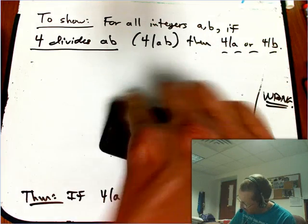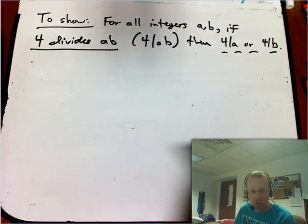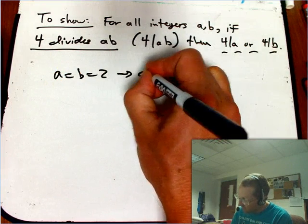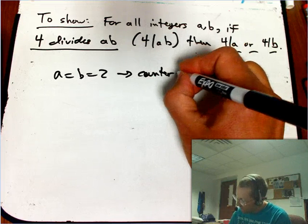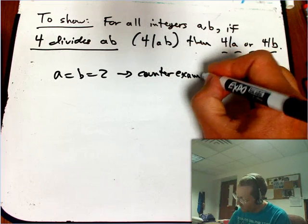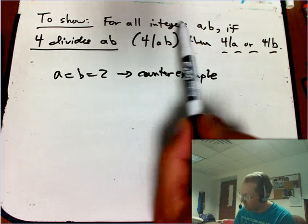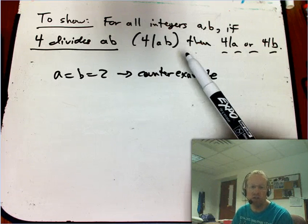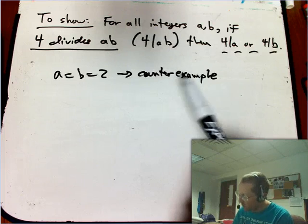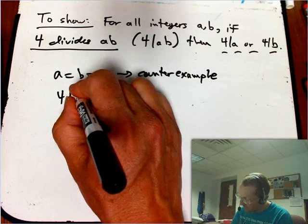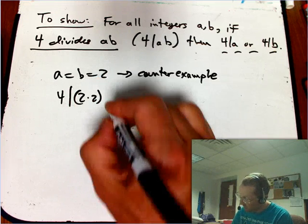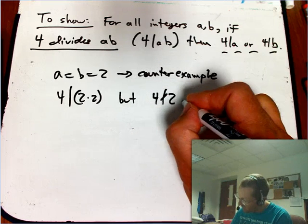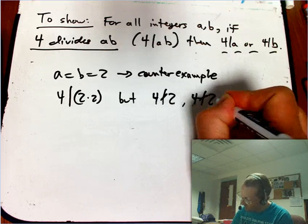Because you might have realized that a and b being 2 is a counterexample. So remember, if you want to disprove a for all statement, a universal, this is saying that something is supposed to be true about all pairs of integers. To disprove that universal, you just have to find one counterexample. Now there's actually many counterexamples to this. But clearly 4 divides 2 times 2. It divides itself. But 4 does not divide 2. You can put a little slash through it to say not divide. And of course, 4 does not divide 2 again.